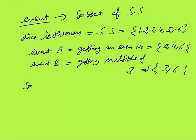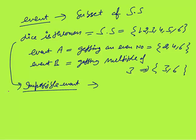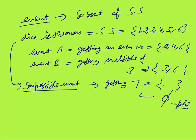What will be the impossible event? While throwing a dice, getting seven would be an impossible event, because once you throw the dice, seven will never come. So this subset will be an empty subset, represented as phi (∅). This event is an impossible event.